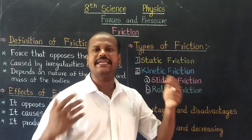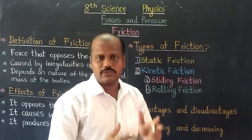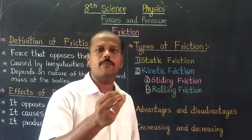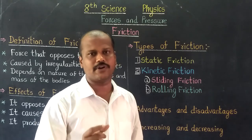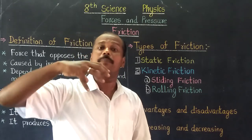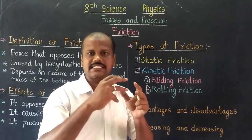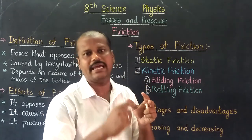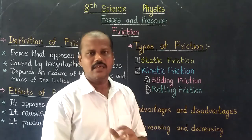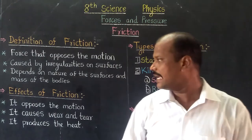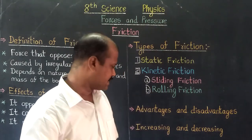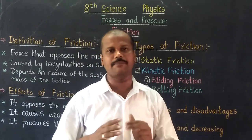To decrease the friction, we use lubricants. Lubricants like oil and grease reduce friction. Using ball bearings, rolling friction is the least friction. So we see friction, its effects, its types, some advantages and disadvantages of friction, and when you increase or decrease friction. Thank you.